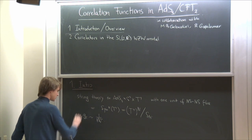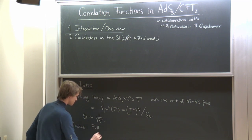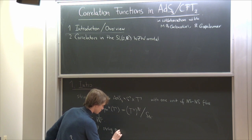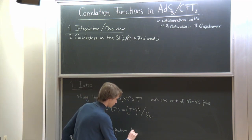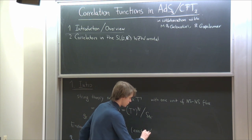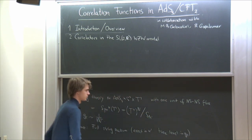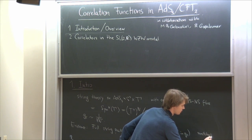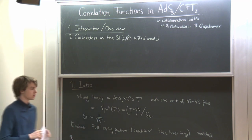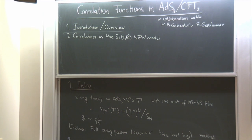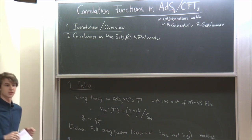The main evidence for this statement till now was that the full string spectrum was matched. This string spectrum is not BPS or anything — it's really the full one. But it's exact in alpha prime, though tree level in g-string. What I want to do today is talk about how correlation functions match in this correspondence and give some more structural reason why something like that should be true, instead of just accumulating evidence for it.